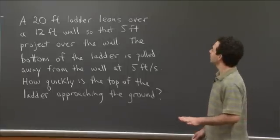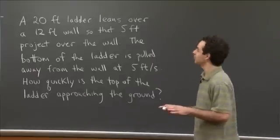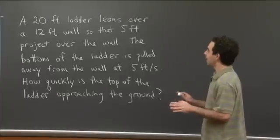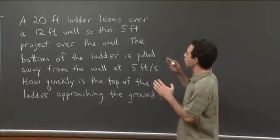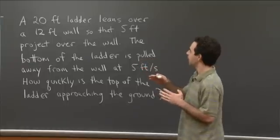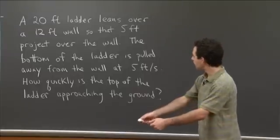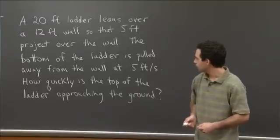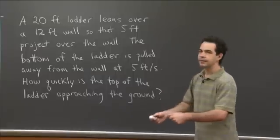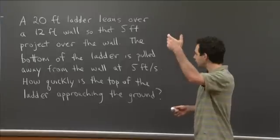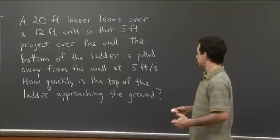It'll be well worth your effort. So we've got a 20-foot long ladder, and it's leaning against a 12-foot wall, but it's leaning over the wall — five feet of the ladder project over the top of the wall. The bottom of the ladder is being pulled away from the wall at five feet per second. The question is: while this is going on, how quickly is the top of the ladder going downwards? How quickly is it approaching the ground?